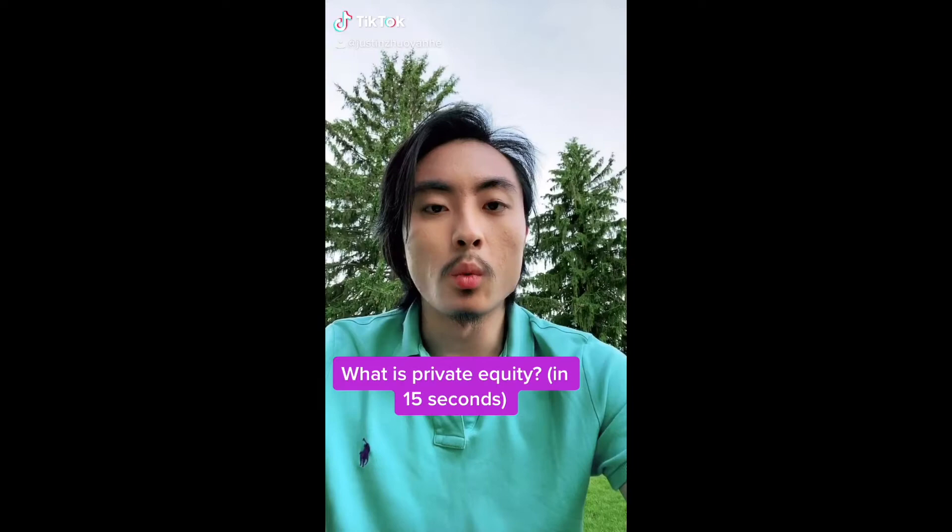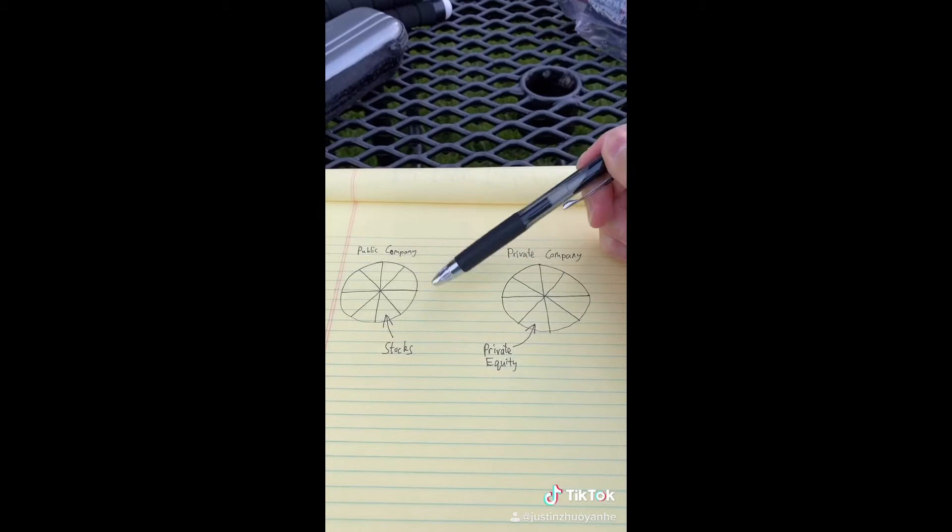What is private equity in 15 seconds? The ownership of a public company is split into shares called stocks. The ownership of a private company is split into shares called private equity.